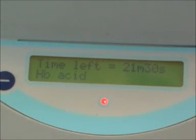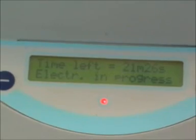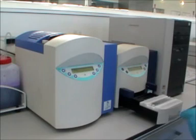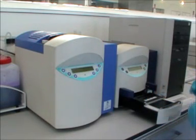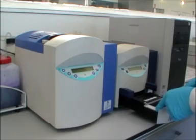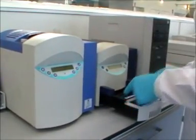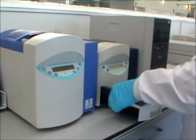At the end of the electrophoretic run, the display indicates that the run is finished. The gel drawer is opened and the gel cover and carbon electrode rods are removed, together with the sample tray.